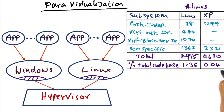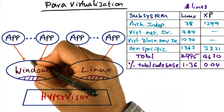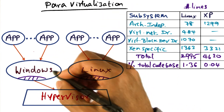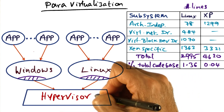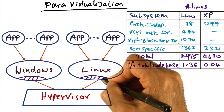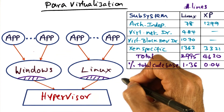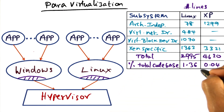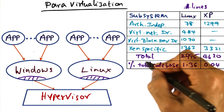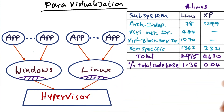In the case of XP, it is miniscule, almost in the noise. So in other words, even though in para-virtualization we have to modify the operating system to run on top of the hypervisor, the amount of code change required can be bound to a very small percentage of the total code base of the original operating system, which is good news.